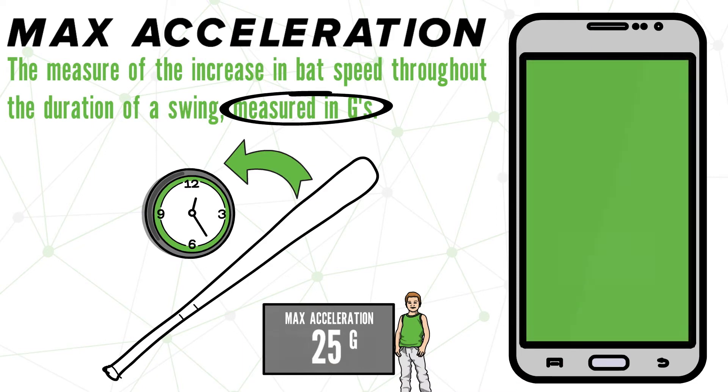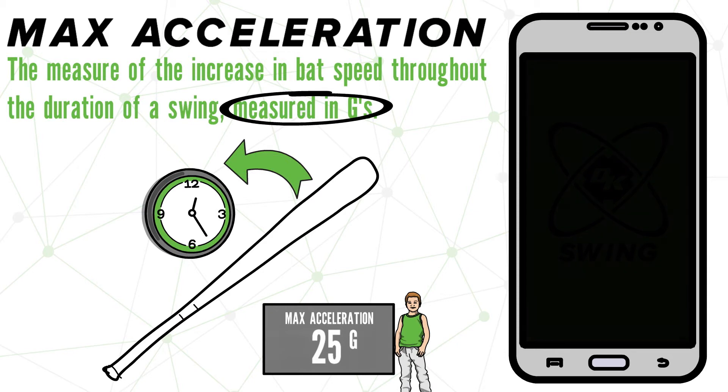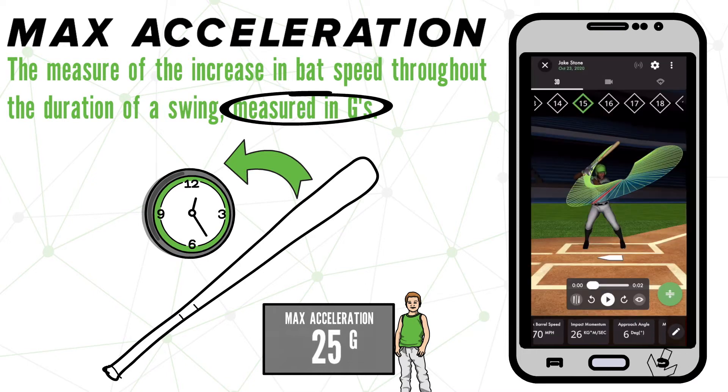Now, where can we find this in the DK Swing Tracker app? Well, if you're just opening the app for the first time, you may need to hit this pencil right here to enable it across your metrics bar. Once that is done, scroll to the right and you'll find it right here.